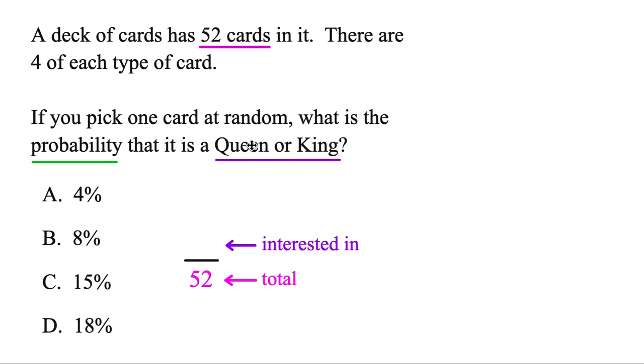And we're interested in getting a queen or a king, but there's 4 of each type of card. In other words, 4 queens and 4 kings. And we're interested in any of these cards. So adding those together, there's really 8 that we're interested in.